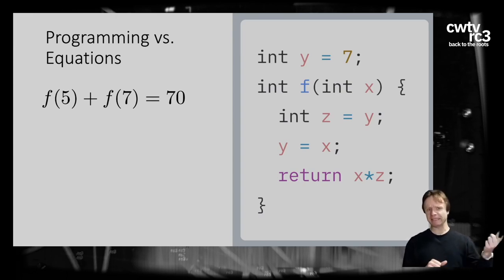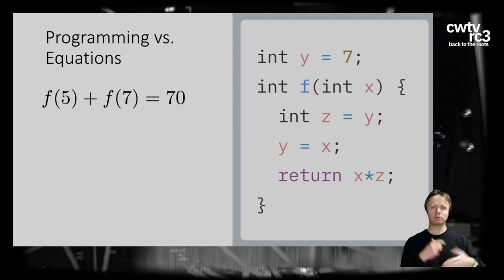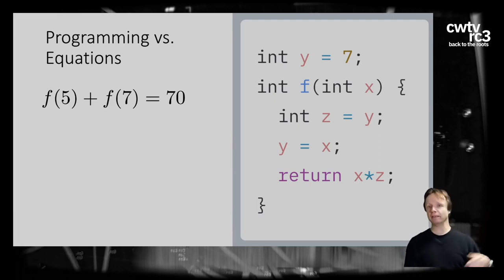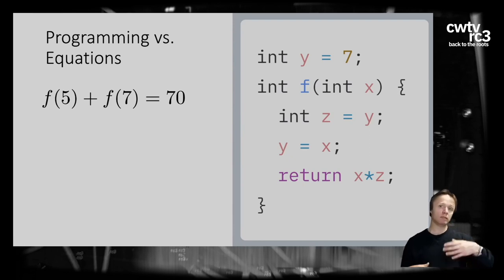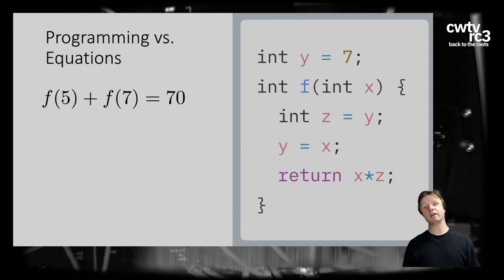Then calling F(7): Y is now 5, we stash it in Z, X is 7, and the product is again 35. The sum is 70. So that equation describes that function — but we had to trace through the program in detail. It only works with that initial value of Y, and only if we call the functions left to right. The language of equations doesn't say anything about respecting order. In mathematics, F(5) should always return the same value; otherwise it becomes much harder to apply the language of equations to programs.